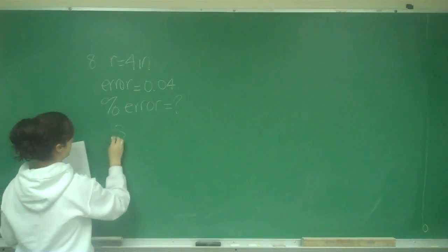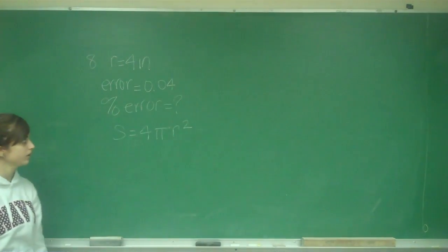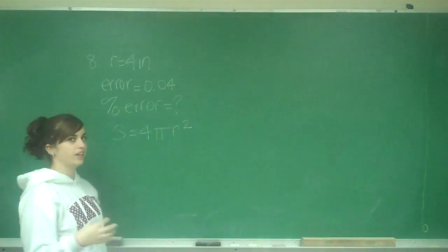So, the surface area is given by 4 pi R squared. At first, I'm going to find the differential.